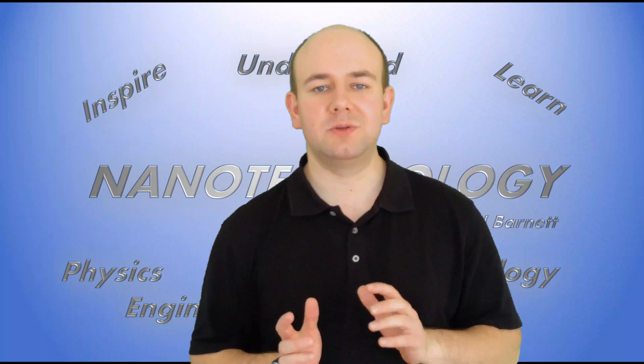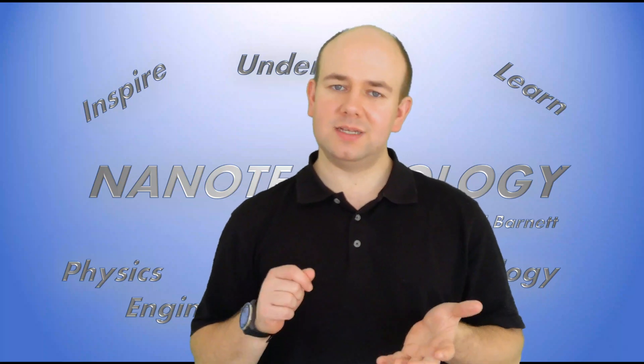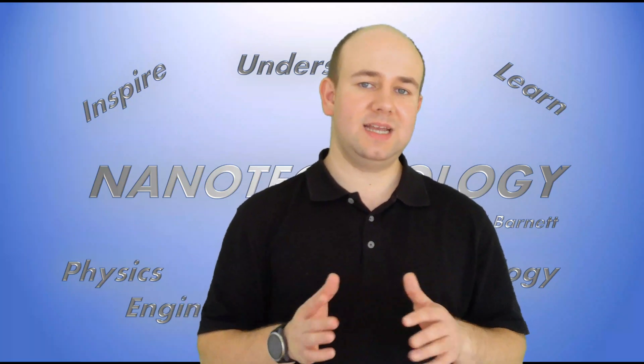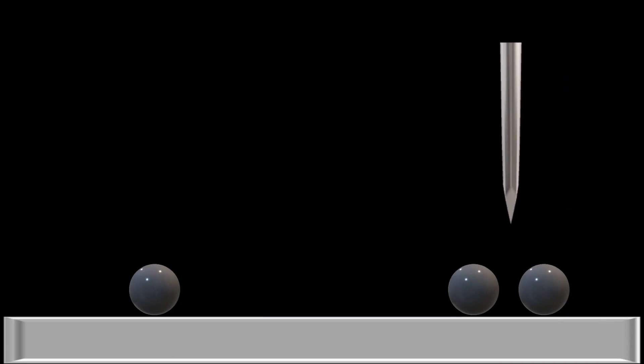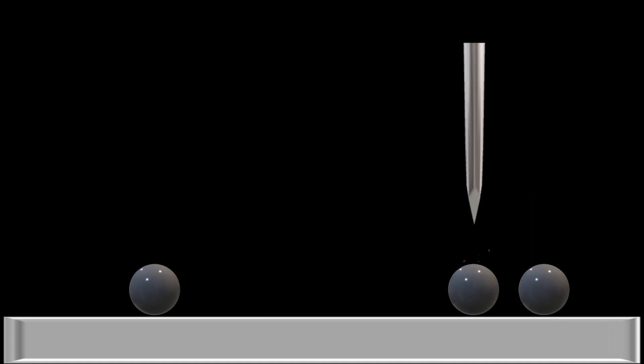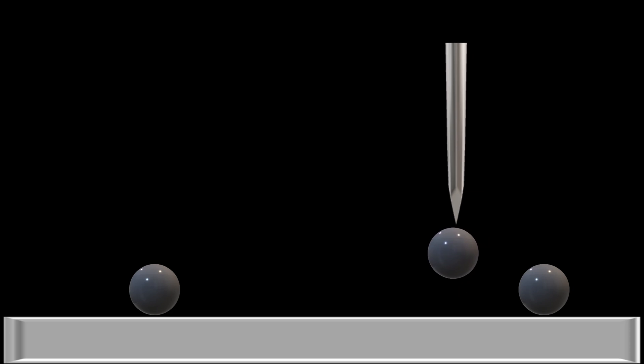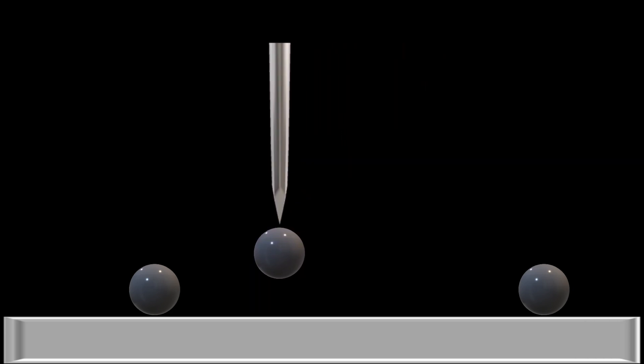So the question is, how did they manage to do this with STM? What they did is they put down their xenon atoms on a surface, scanned over them using STM, using what I said in the previous video to be able to image where the atoms were. And then placed the tip over one of those atoms, brought it in very close and applied quite a large bias or voltage to that tip. And what that did was attract the xenon atom up and attached it to the end of the tip.